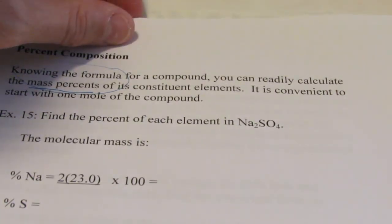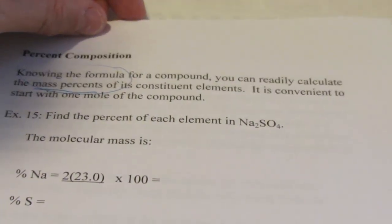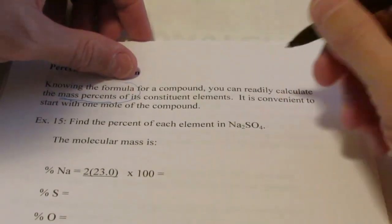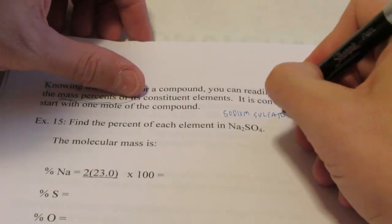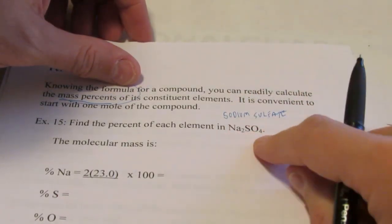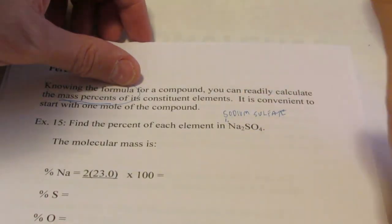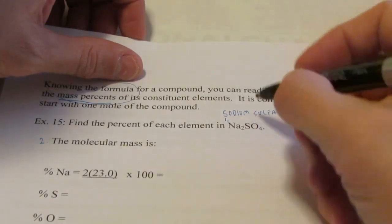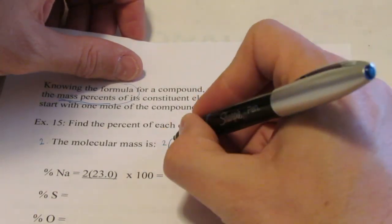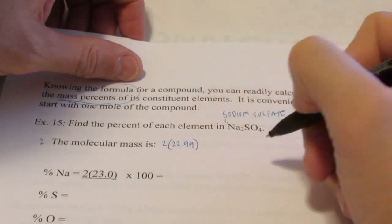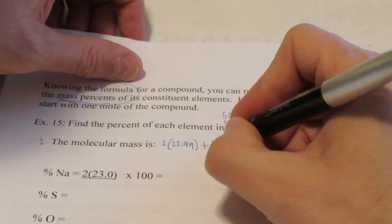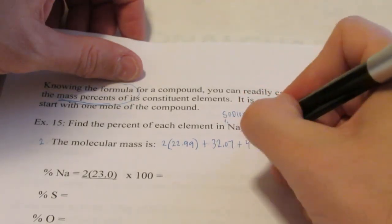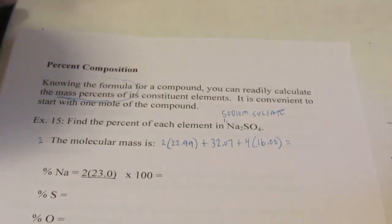Let's jump right into it by doing example 15. I want to find the percent of each element in sodium sulfate. You should know that's Na₂SO₄. The first thing you need to do is write the formula for the compound. The second thing is find its molecular weight. The molecular weight consists of two sodiums — each sodium is 22.99 grams per mole, from the periodic table. We have one sulfur at 32.07 grams per mole, and four oxygens, each 16.00 grams per mole.